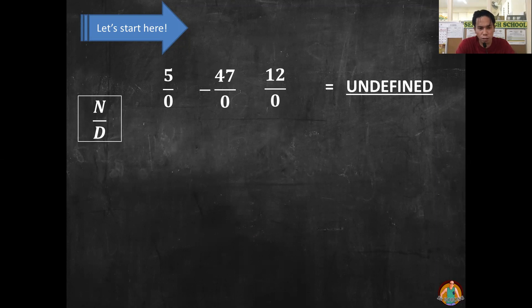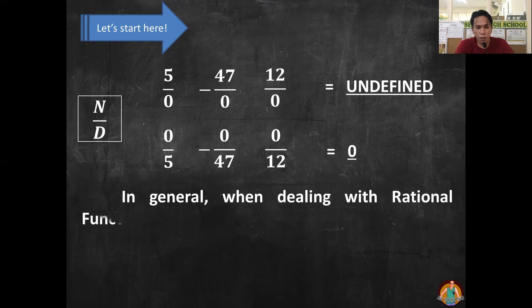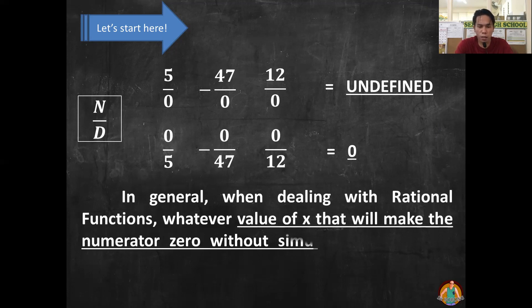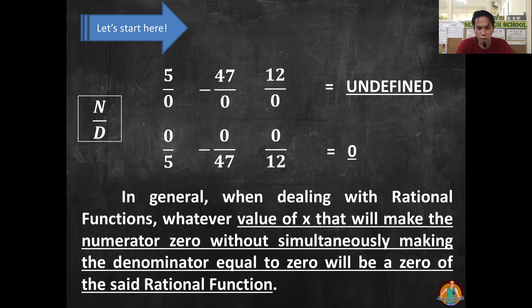So in the same fraction, if we have the numerator equal to zero — let's say, for example, 0 over 5, 0 over 47, and 0 over 12 — will give us the answer 0. So in general, when dealing with rational functions, whatever value of x that will make the numerator 0 without simultaneously making the denominator equal to 0 will be a 0 of the same rational function.